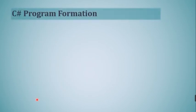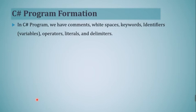In the end, let's discuss program formation in C#. A C# program consists of: comments, white spaces, keywords, identifiers or variables, operators, literals, and delimiters or punctuators. If we look at any C# program carefully, it is composed of these seven to eight things: comments, white spaces, keywords, identifiers, operators, literals, and punctuators or separators used to separate the blocks from each other.